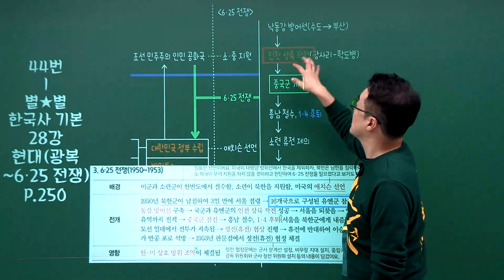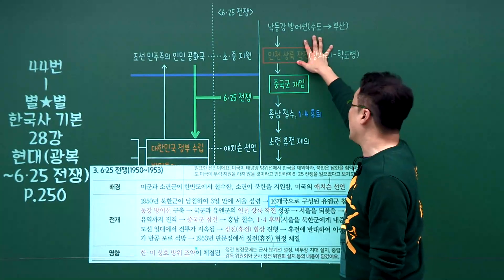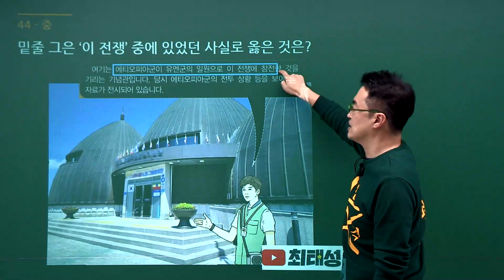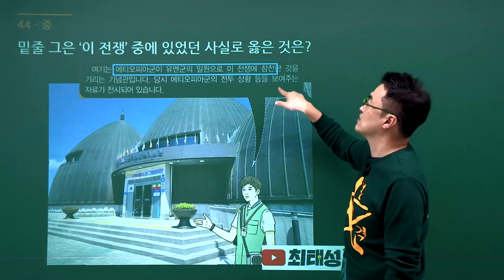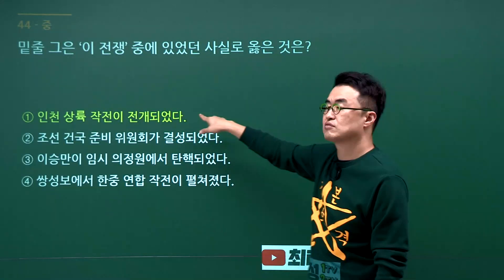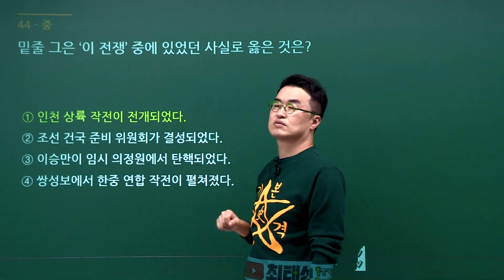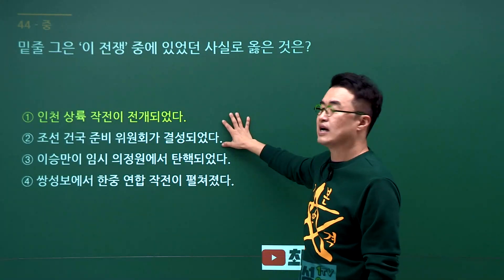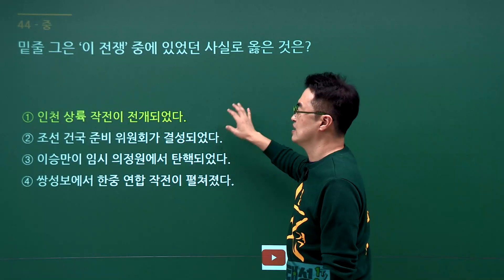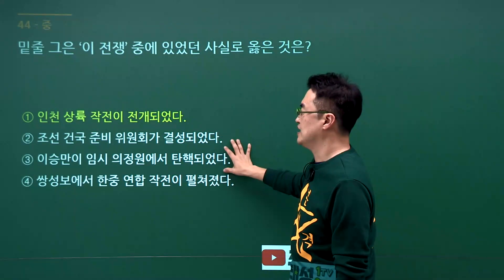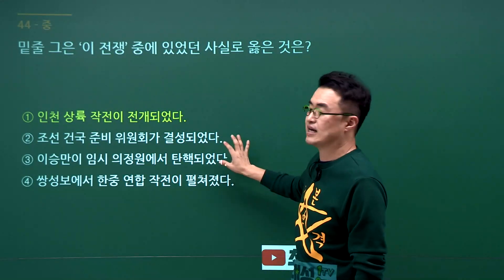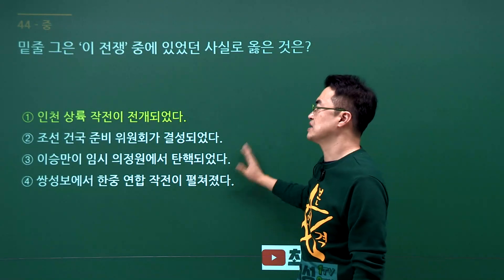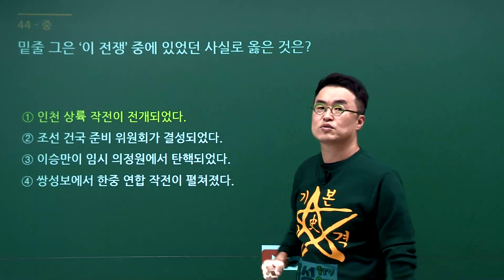6.25 전쟁 문제입니다. 인천상륙작전이 6.25 전쟁 때 있었습니다. 유엔군이 참전한 6.25 전쟁에 있었던 사실은 인천상륙작전이며 정답은 1번입니다. 조선건국준비위원회 결성은 6.25 전쟁 이전이고, 이승만의 임시의정원 탄핵은 일제강점기, 쌍성부도 역시 일제강점기입니다. 정답은 1번입니다.